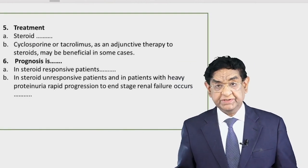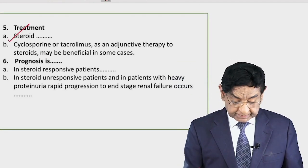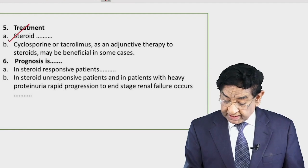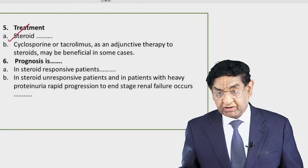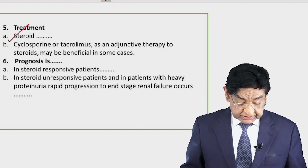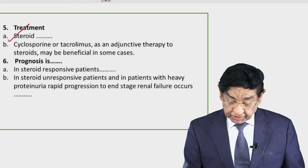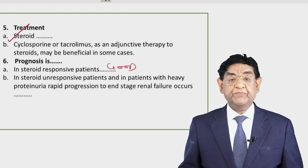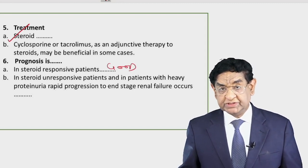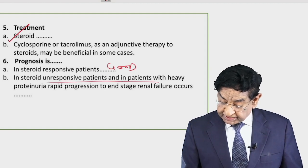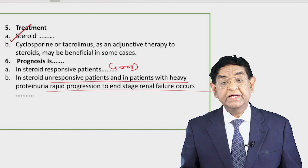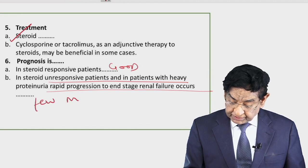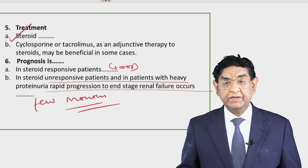Treatment uses corticosteroids as the mainstay; other immunosuppressive drugs like cyclosporine and tacrolimus can be used. Prognosis depends on whether it is steroid-responsive or not. Those who are steroid-responsive have good prognosis, but in unresponsive patients with heavy proteinuria, rapid progression to end-stage renal disease can occur within months to a few years.